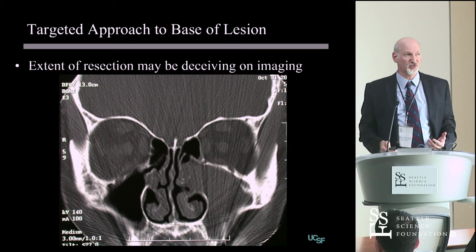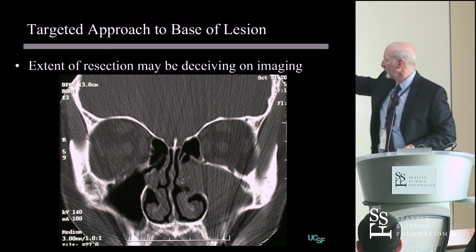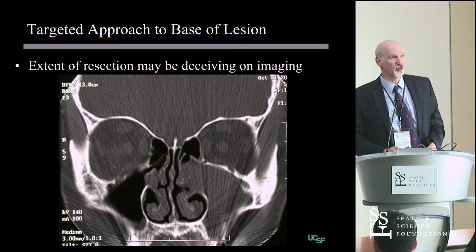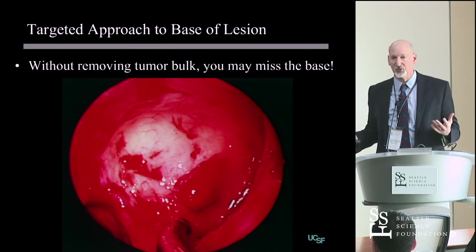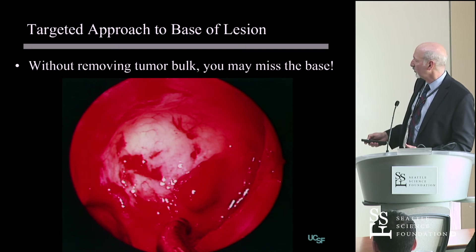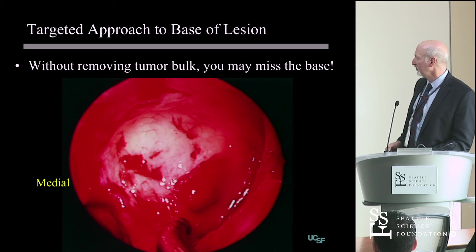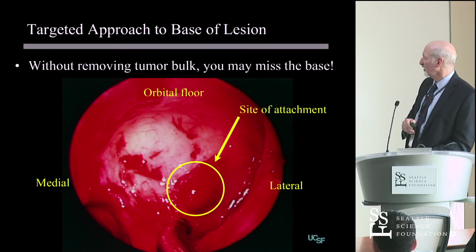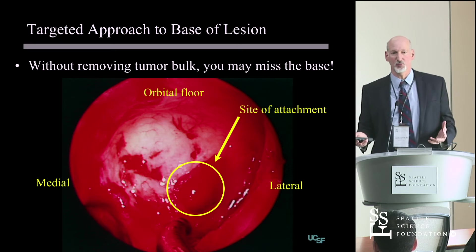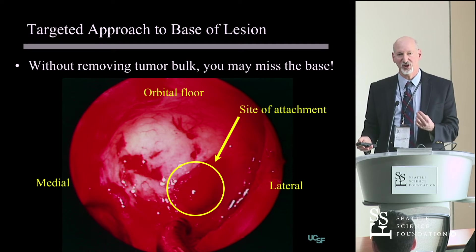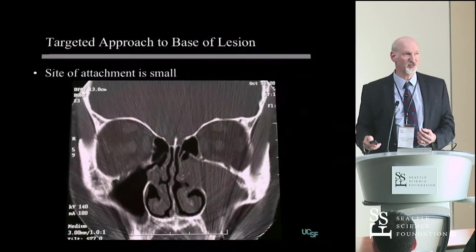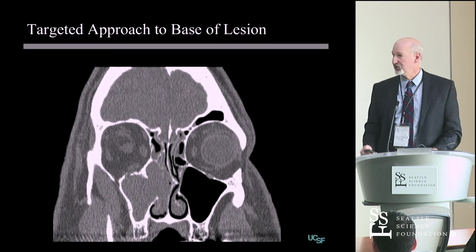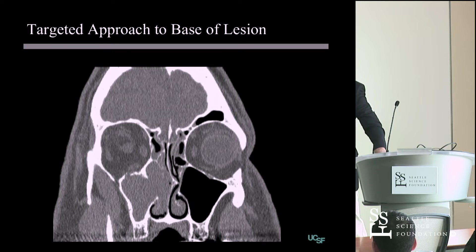Sometimes the base can be somewhat deceiving on imaging. This is actually all tumor — the entire sinus was filled with tumor extending into the nose. You microdebride it down. Looking now into the lateral maxillary sinus on the patient's left side, the site of attachment was right there. That whole tumor — three to four centimeters — was attached in a one square centimeter base lateral in the maxillary sinus, which you can see on the CT scan. That's the nipple sign, a type of hyperostosis seen in the maxillary sinus.